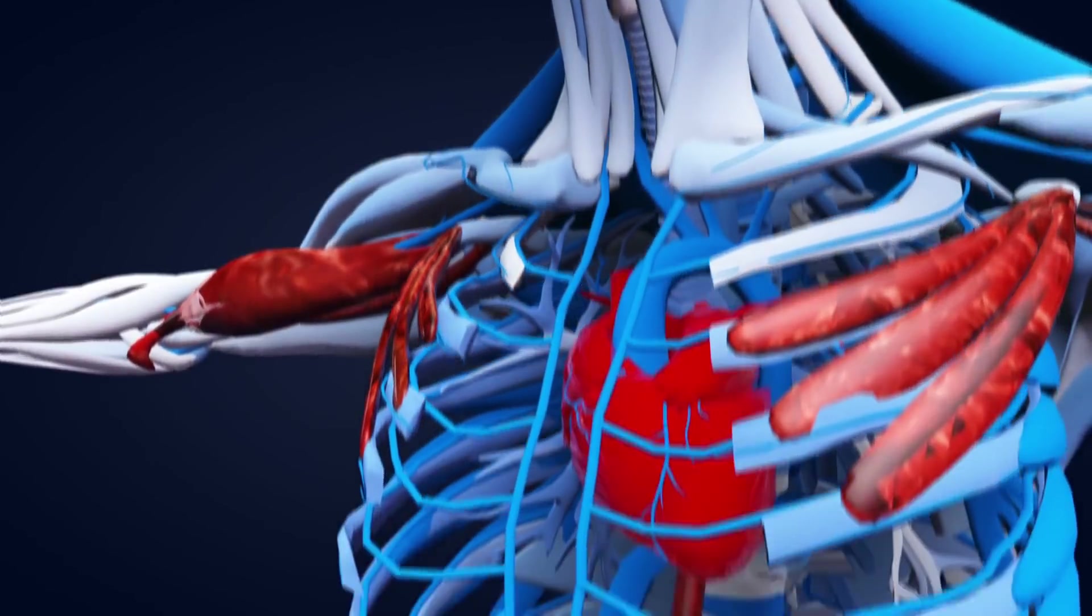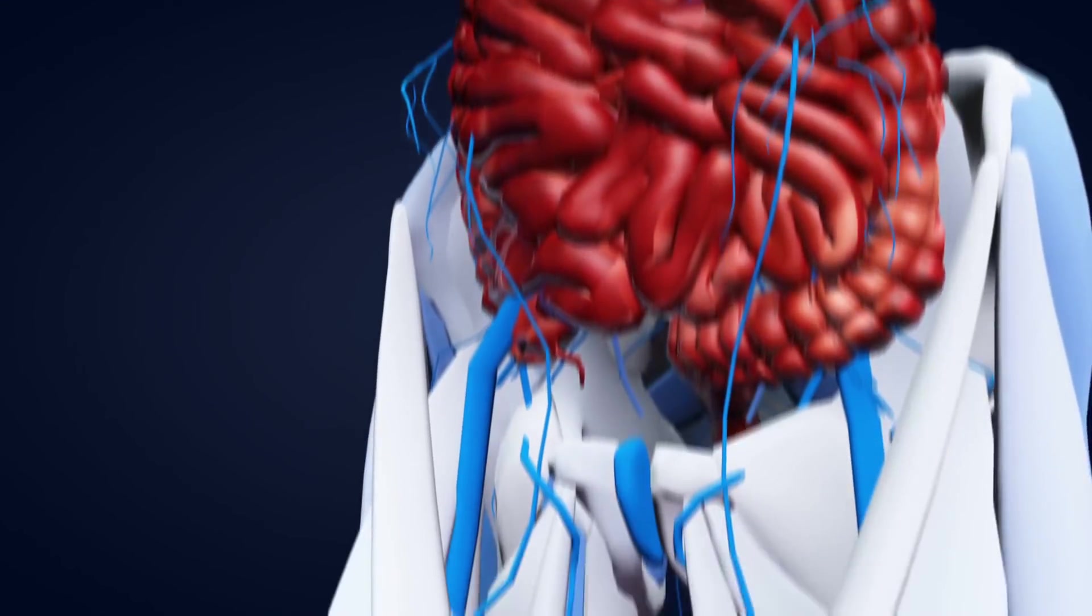Dopamine hormone is a type of neurotransmitter and plays important role in how we think, plan and feel pleasure.